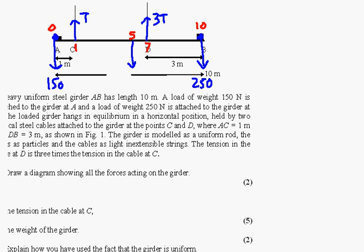It's a question from January 2002, and I've answered the first bit where I've drawn the diagram. I'm going to answer the last question, the last part of the question now. It says, explain how you've used the fact that the girder is uniform. The answer is, the centre of mass will be at the centre of the girder, in which case.